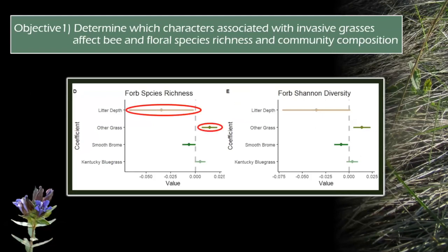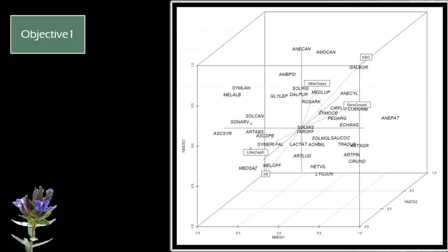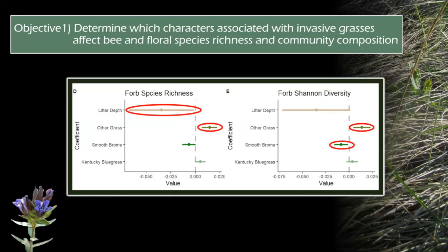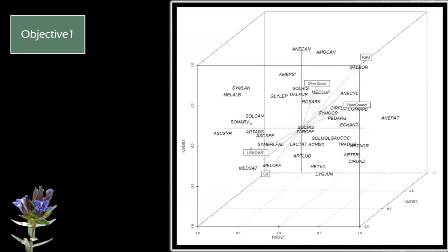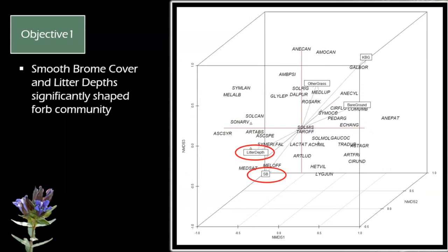For the forb side of things: forb species richness and forb diversity were positively associated with the presence of other grasses — mostly native grass species — so it makes sense that sites with more native grass presence could have more forb diversity. Litter depth was negatively associated with forb species richness. And forb species Shannon diversity was negatively associated with smooth brome. In the forb community ordination, litter depth and smooth brome were both significant contributors, with sweet clover, alfalfa, and Canada thistle really associated with areas of high litter depth and smooth brome.